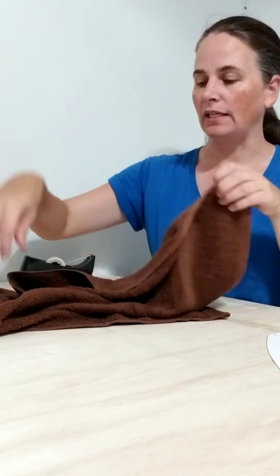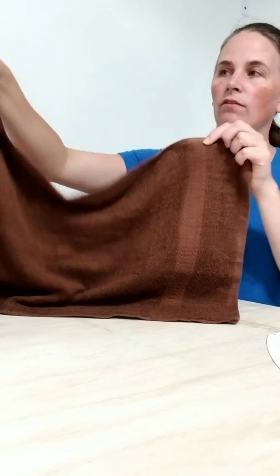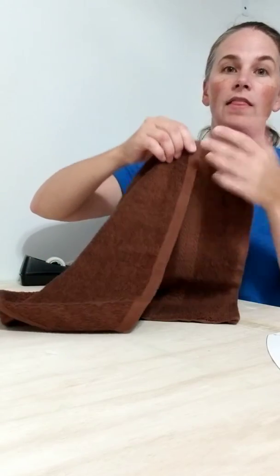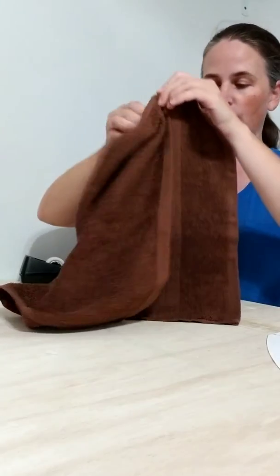You can either fold your towel in half or I recommend folding the other edge of your towel to that stripe. And that'll keep that stripe out of your finished piece.